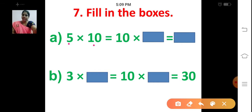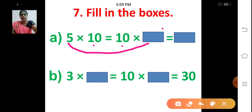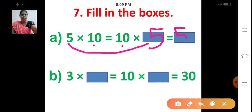5 into 10 is equal to 10 into ___. You know the multiplication fact, right? If we change the order, the product will be the same. So, 5 into 10 — change the order — becomes 10 into 5. So write 5 in the box. 10 fives are 50. Write down 50 in the second box.